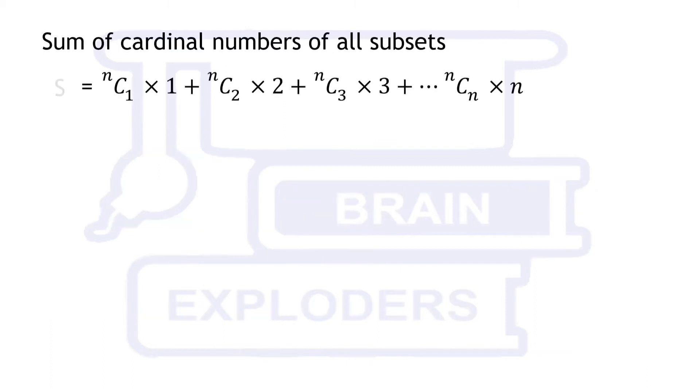Let this sum is equal to S. We can replace nc1, nc2 and nc3 by ncn-1, ncn-2 and ncn-3 respectively by using the property ncn-r equals to ncr.